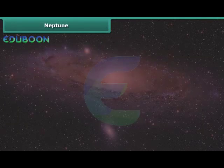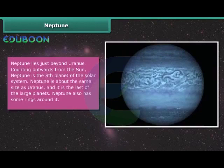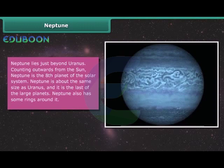Neptune. Neptune lies just beyond Uranus. Counting outwards from the Sun, Neptune is the eighth planet of the solar system. Neptune is about the same size as Uranus and it is the last of the large planets. Neptune also has some rings around it.